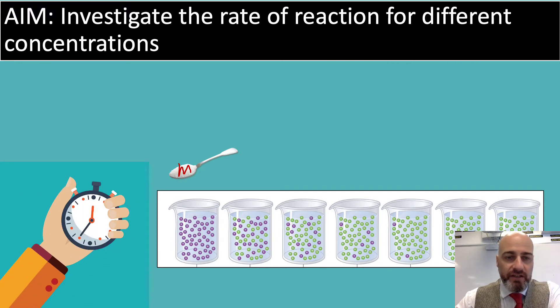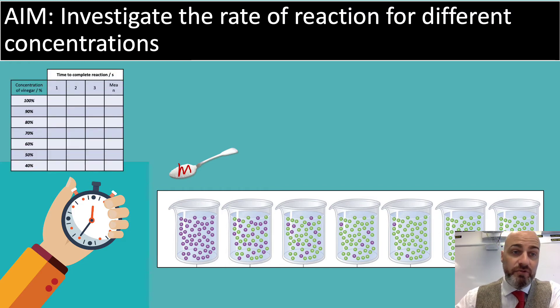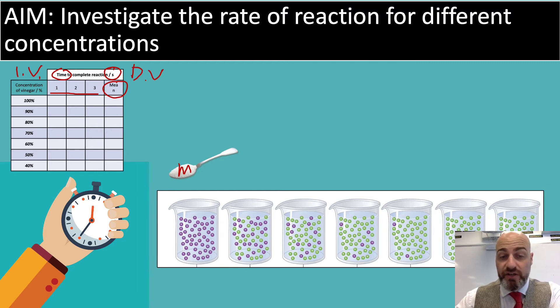You'll time the length of time for each reaction to take place, and if you want to be very scientific about it and go for increased accuracy, you'll do three different trials at least and take a mean. And that will give you an independent variable of the concentration of vinegar and a dependent variable of time. And you'll also have control variables which you'll need to identify, but we'll talk about that in class.